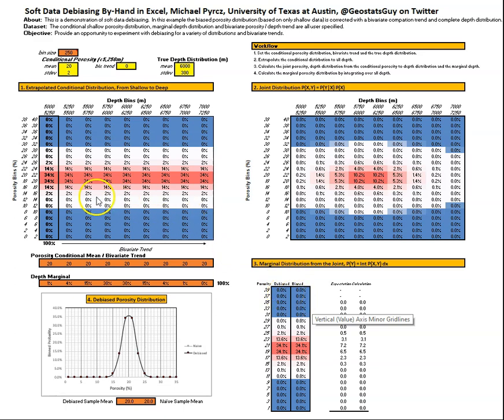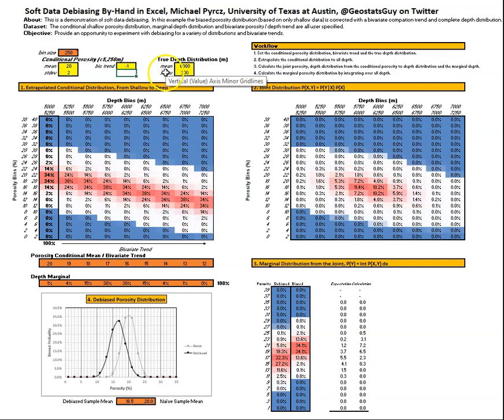Because we're performing this operation with a zero trend in the depth porosity relationship. So let's go ahead now and try changing this value to be a negative bivariate trend. We're modeling a linear relationship over increasing depth, a change in the mean of the conditional distributions. So I put a negative one here. So for each one of these bins, I'm having a shift in the mean of about negative one porosity unit. And the result is, look at the shift, shift, shift, shift. And so all of the conditional distributions are shifting down.